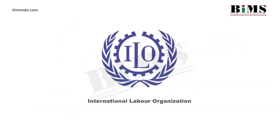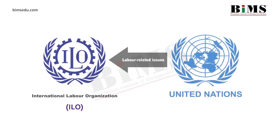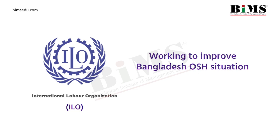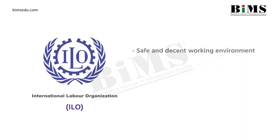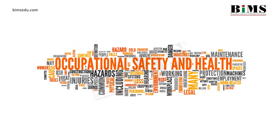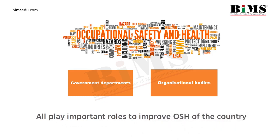International Labor Organization, ILO, is the lead agency on labor-related issues for the United Nations. In Bangladesh, ILO is working to improve the OSH situation. ILO is committed to developing a safe and decent working environment and promoting labor rights for all workers. Occupational health and safety is critical for all countries, and the government departments and organizational bodies mentioned here are all playing important roles to improve occupational health and safety in the country.